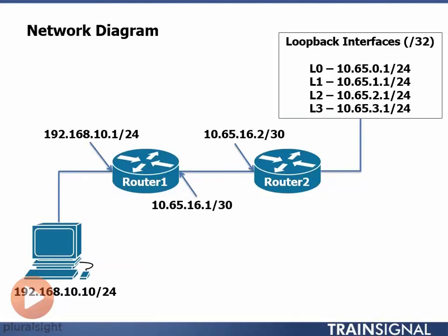What I have set up here is a small network with two routers. I have my PC at 192.168.10.10, connected to Router 1, my PC's default gateway at 192.168.10.1. Router 1 is connected to Router 2 via fast Ethernet ports, and on Router 2 I have four interfaces set up, each with a different network address.